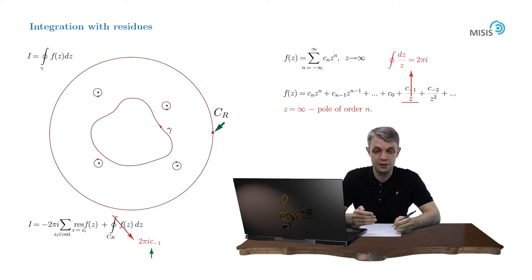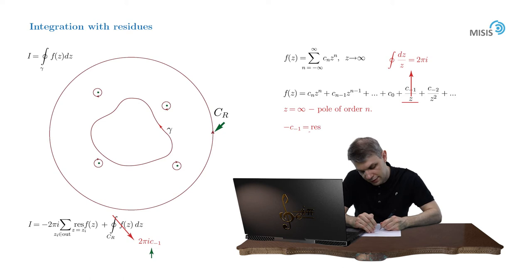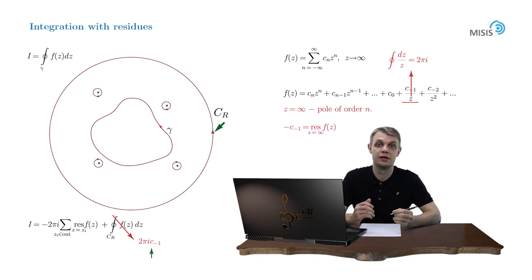And from symmetry considerations, this coefficient c_{-1} with negative sign is called the residue of the function at infinity. And this is the formal definition. And remember that the residue at infinity is just a clever way of expressing the integral over an infinite circle.